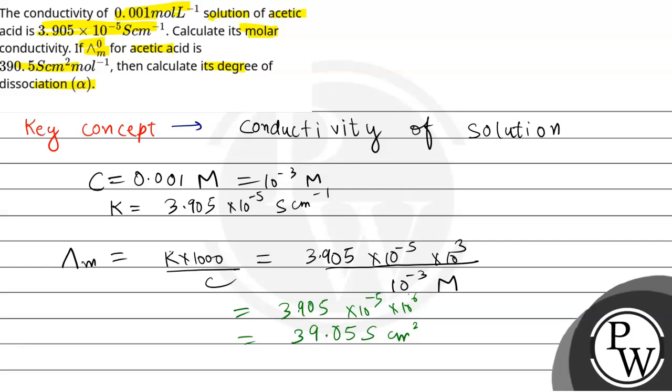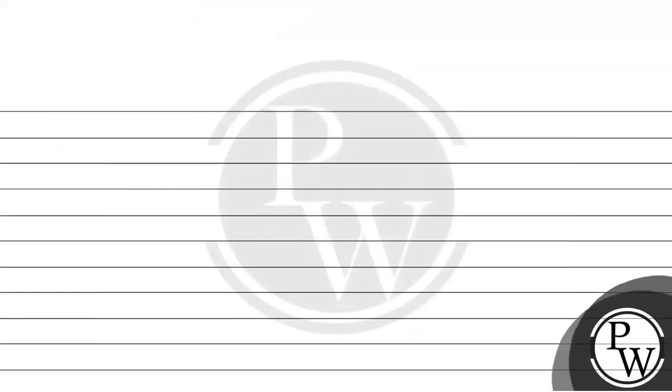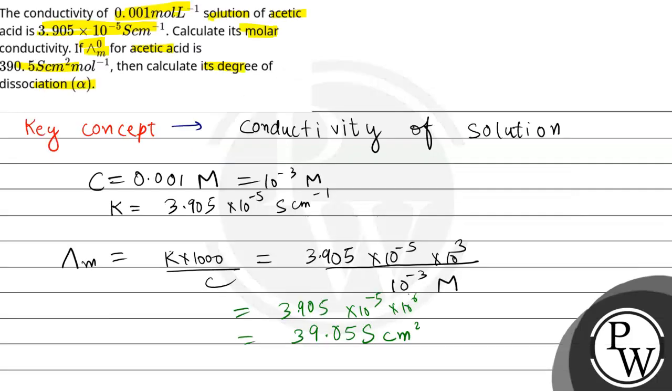Now we have to calculate degree of dissociation, which is alpha. So what is alpha? Degree of dissociation, that is equal to λm divided by λ° naught, that is molar conductivity divided by molar conductivity at infinite dilution.